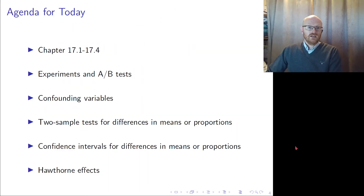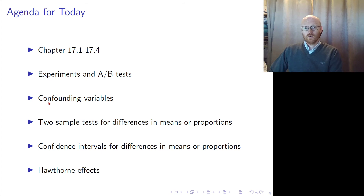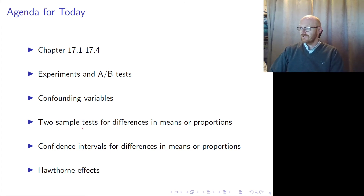The agenda for lecture 4 is: we are going through chapter 17, the first part of chapter 17. We are going to look into experiments and A/B testing. We are going to talk more about confounding variables and how we can avoid them. And we are going to look into two-sample tests for differences in means or proportions — looking at the difference between two groups.